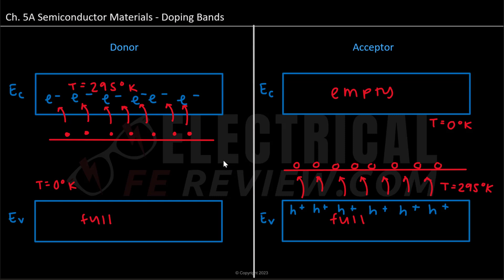So a good way to remember both of these different bands is that for donors, they are giving away their electrons. And so whenever you give away, you have less of, so you're subtracting.